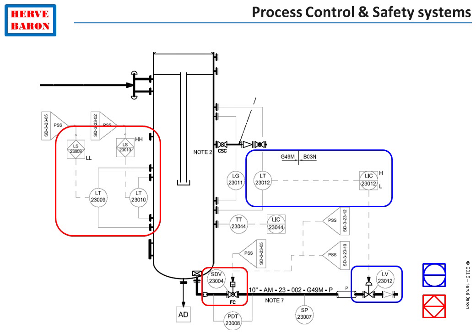The process control system and process safety system have completely different equipment — different sensors, controllers and final elements. For instance, the liquid level at the bottom of a column is controlled by a controller that is part of the process control system, shown with a circle, which acts on a level control valve to maintain a particular level. Should this controller or valve fail and the level fall too low, a separate level transmitter will pick it up and send a signal to the process shutdown system, which will close a shutdown valve to avoid gas blow-by to the downstream side.